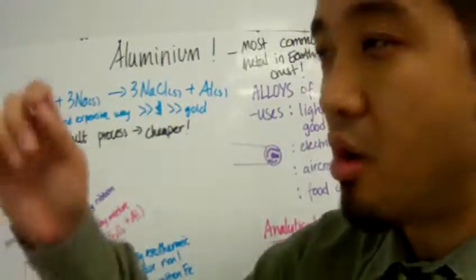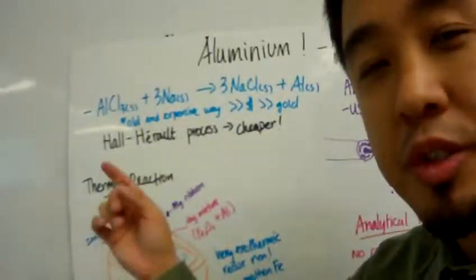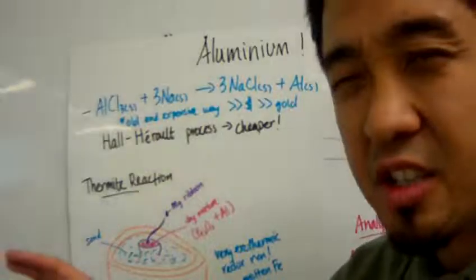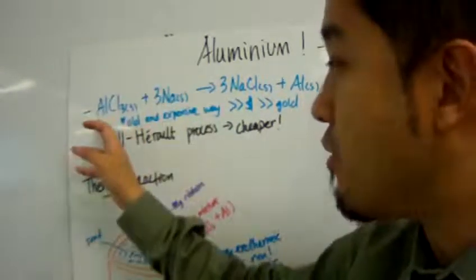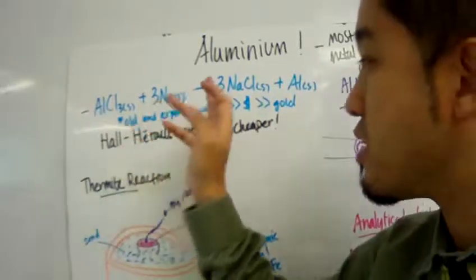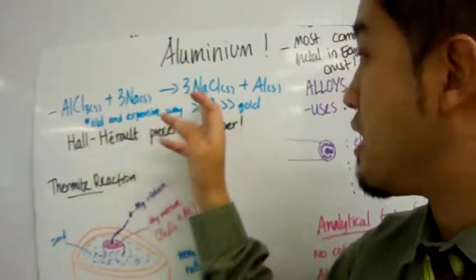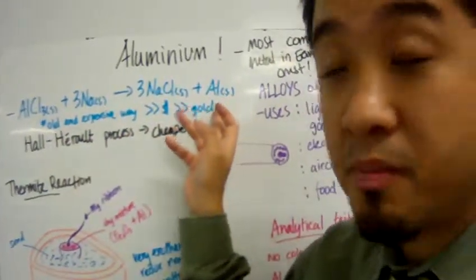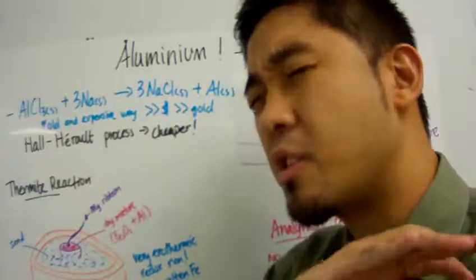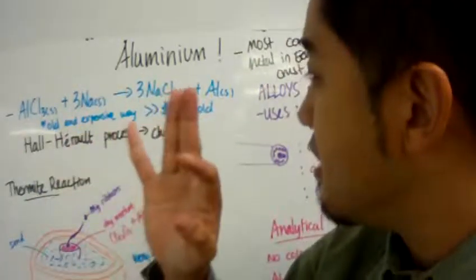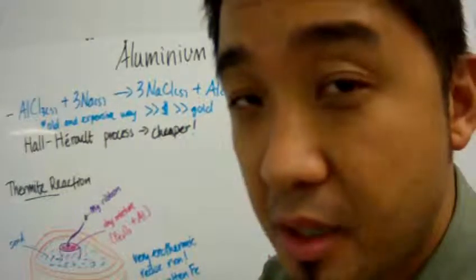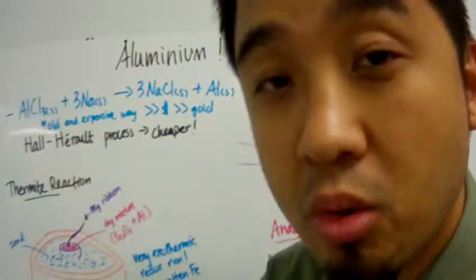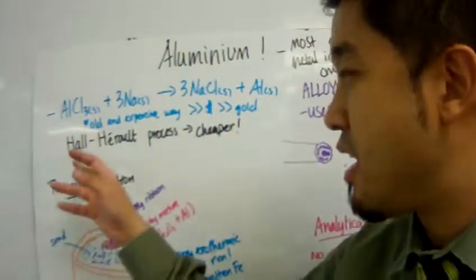Back in the old days, before we discovered the electrolytic process, aluminum was extracted by having aluminum chloride reacting with sodium metal to get sodium chloride and aluminum. This was a very expensive method of extracting aluminum, and it is true that back in the old days, aluminum was more expensive than gold.